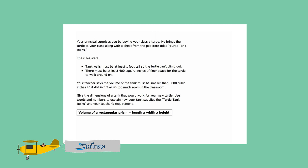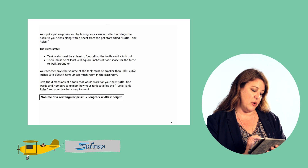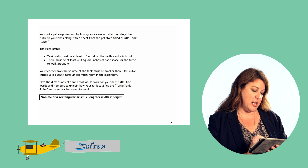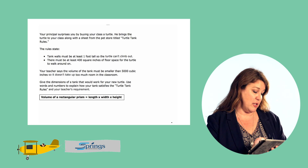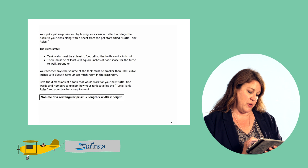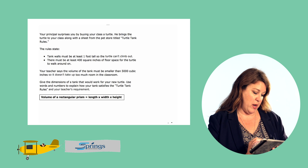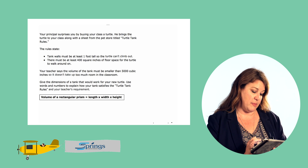Let's take a look at question number five. It says your principal surprises you by buying your class a turtle. He brings the turtle to your class along with a sheet from the pet store titled Turtle Tank Rules. The rules state: tank walls must be at least one foot tall so the turtle can't climb out, and there must be at least 400 square inches of floor space for the turtle to walk around on. Your teacher says the volume of the tank must be smaller than 5,000 cubic inches so it doesn't take up too much room in the classroom. Give the dimensions of a tank that would work for your new turtle, and use words and numbers to explain how your tank satisfies the rules. It also gives us the formula: volume of a rectangular prism equals length times width times height.